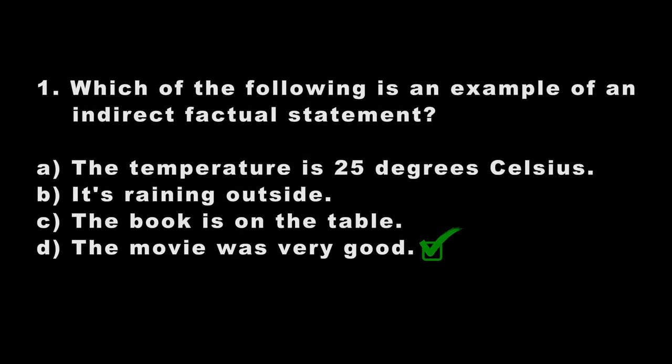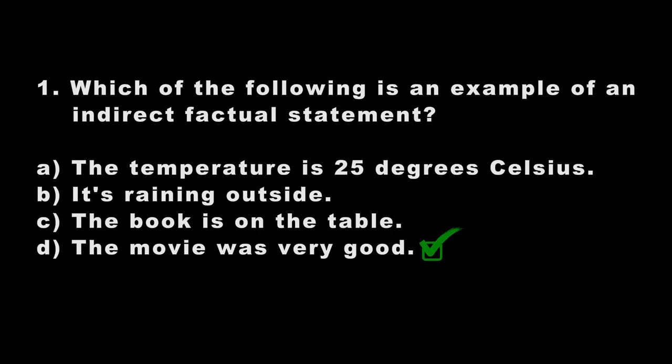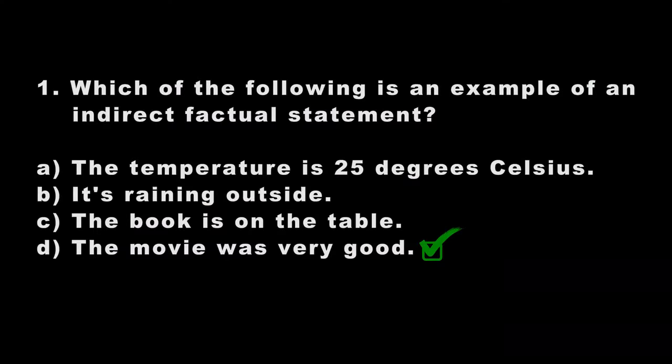Let's consider the other options. 'The temperature is 25 degrees Celsius' — the writer plainly states the degree, so there is no doubt. 'It's raining outside' — that is a fact; if you go outside you can verify it. 'The book is on the table' — that is also not indirect; if you go to the table you will find the book. So D is the only indirect one. Remember, we will still look at the elimination method.